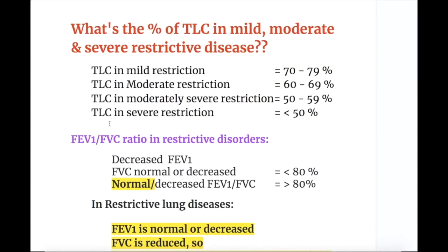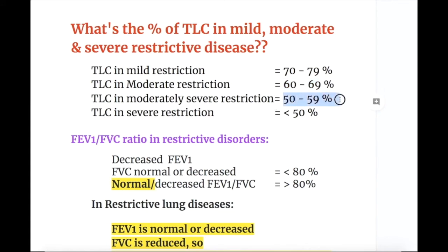The percentage of TLC in restrictive disease by severity: in mild restriction TLC is 70–79%, in moderate restriction TLC is 60–69%, in moderately severe restriction TLC is 50–59%, and in severe restrictive disease it is less than 50%.